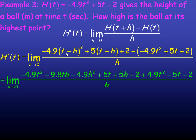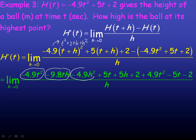Just like in the last page when I squared x plus h, when you square t plus h here, it'll be t squared plus 2th plus h squared. So when you multiply that all by negative 4.9, you get these three terms. Then we distribute the 5 in here, so we get 5t plus 5h, and then that 2. When I remove these brackets, all the signs change, so we get these last three terms.